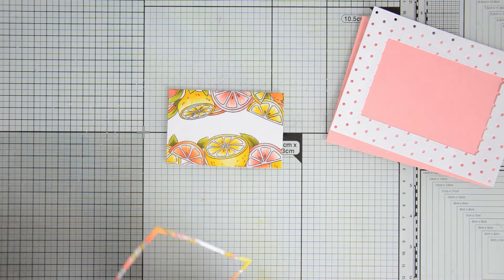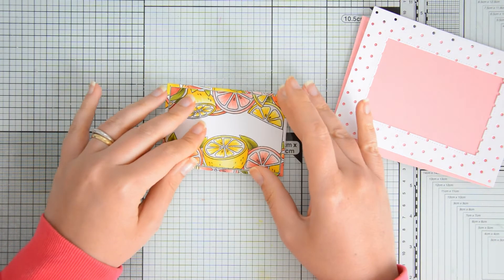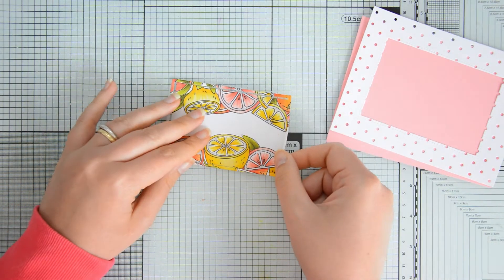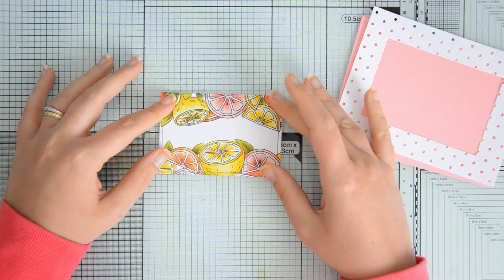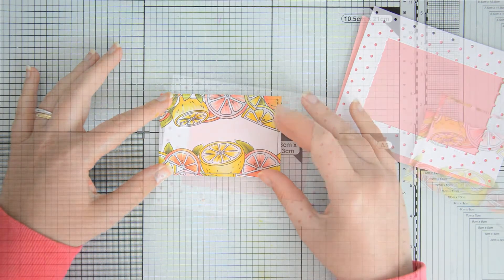At this point, because I wanted to create an inlay die cut effect with that front panel that you can see on the side of the screen, I used again the dotted pattern set 2 dies to die cut also this panel with the citruses.